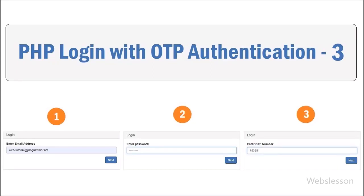Hello friends, this is the third part of how to implement a one-time password login system in PHP script. In this part we will learn how to validate user password details, and if the user enters the correct password, then generate a dynamic OTP and send it via email.